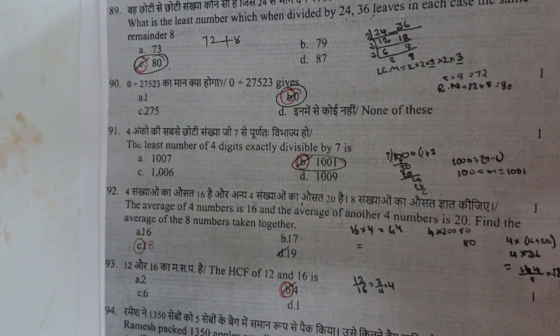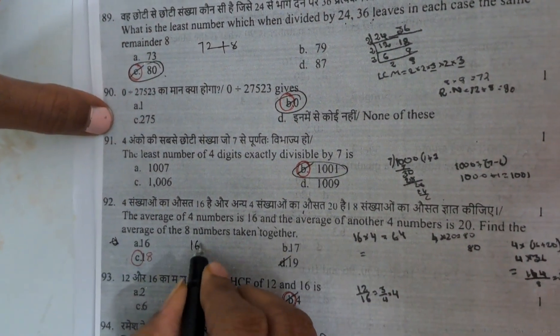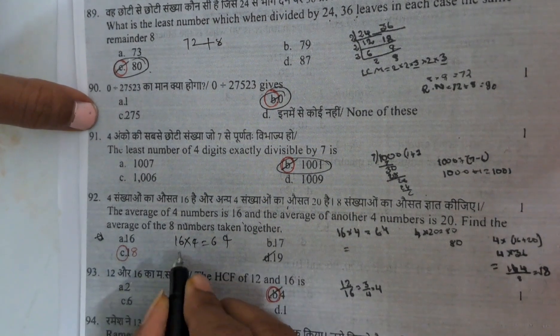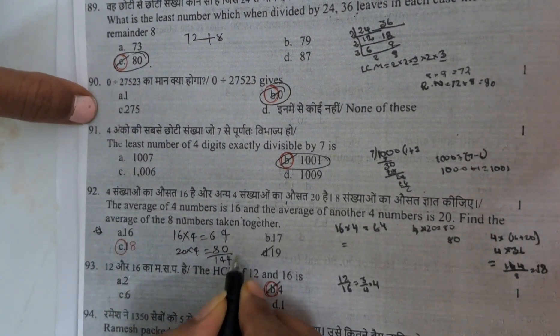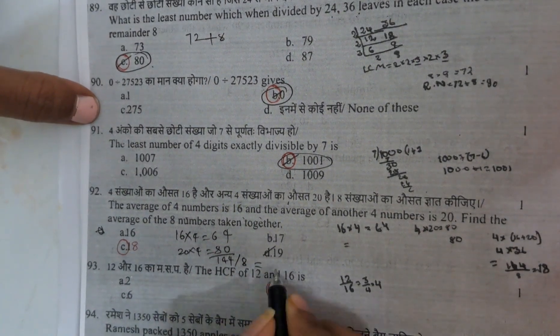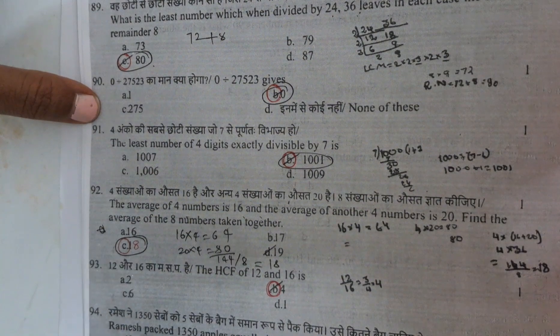And next here, 0 divided by anything is 0. The least 4 digit number exactly divisible by 001. And next, the average of 4 numbers. Here one more tricky lengthy question. Average of 4 numbers, first 4 numbers, 16 times 4 is 64. And next 20 times 4 is 80. If you add this, 144 by 8 you will get the answer. Here 18, the average of 8 numbers is 18.